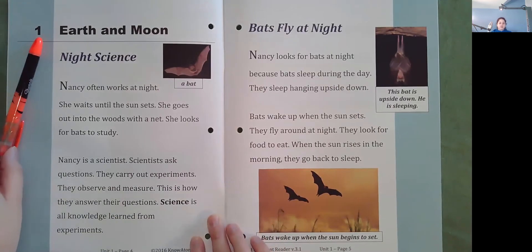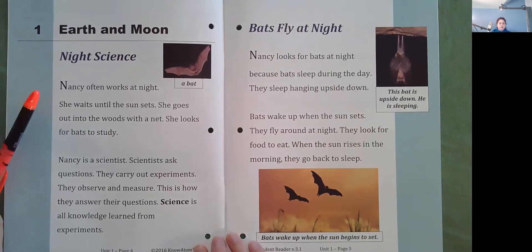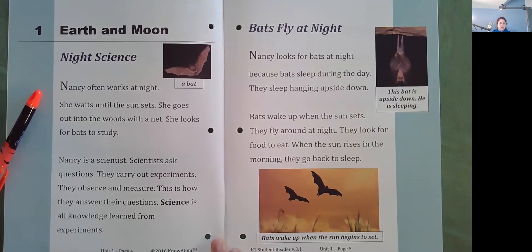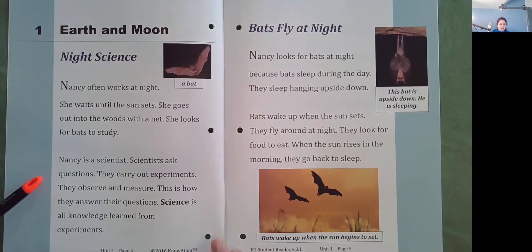Earth and Moon. Night Science. Nancy often works at night. She waits until the sun sets. She goes out into the woods with a net. She looks for bats to study. Nancy is a scientist. Scientists ask questions. They carry out experiments. They observe and measure. This is how they answer their questions. Science is all knowledge learned from experiments.